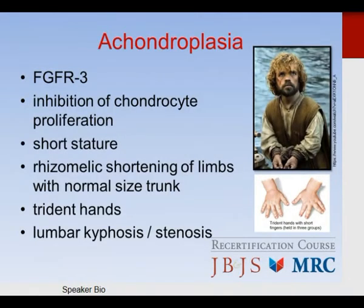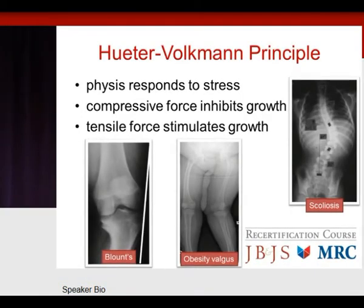Achondroplasia is a dysfunction of the zone of proliferation caused by fibroblast growth factor receptor 3 — inhibition of chondrocyte proliferation. These patients have short stature, trident hands, lumbar kyphosis, and stenosis. The Heuter-Volkman principle describes how the physis responds to stress: compressive force inhibits growth and tensile force stimulates growth. This is important in conditions such as Blount's disease, obesity, valgus, and scoliosis.